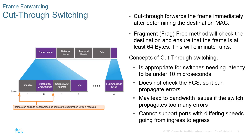Because there may be interfaces with different speeds, cut-through switching can lead to bandwidth issues. If there are many incoming ports pumping data out one specific egress point, that egress point may become overwhelmed. Cut-through switching also cannot support ports with different speeds between ingress and egress, because congestion would build up.